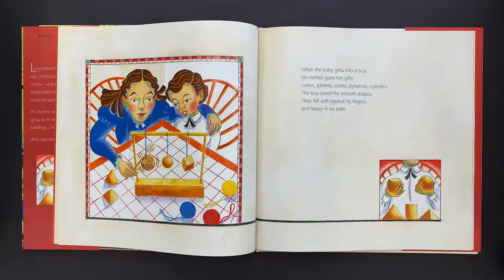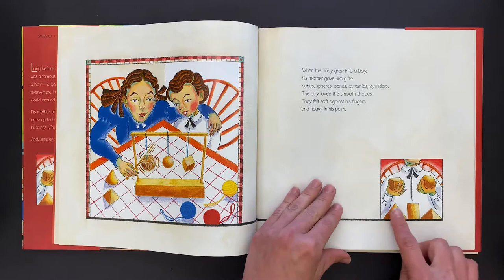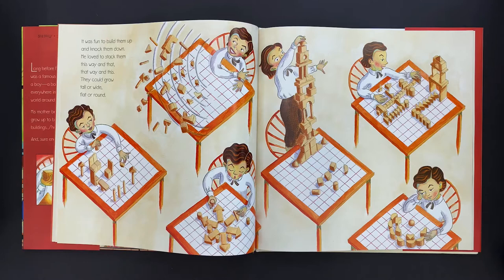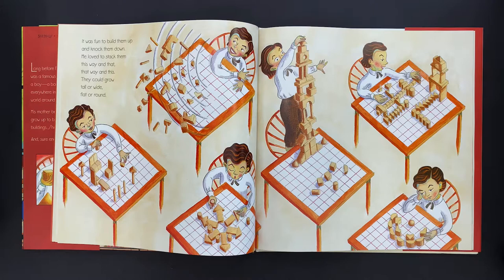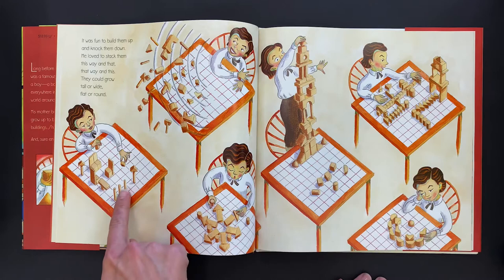When the baby grew into a boy, his mother gave him gifts. Cubes, spears, cones, pyramids, cylinders. The boy loved the smooth shapes. They felt soft against his fingers and heavy in his palms. It was fun to build with them and knock them down. He loved to stack them this way and that, that way and this. He could grow tall or they could grow tall or wide, flat or round.